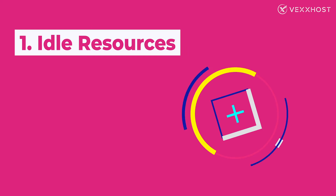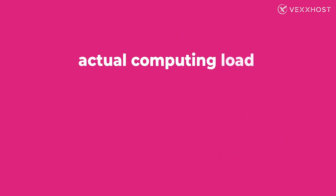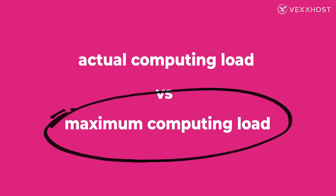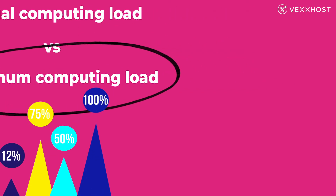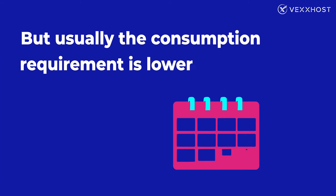Idle resources. Idle resources are those that are paid for but that aren't used. Therefore, when it comes to actual computing load versus maximum computing load, companies typically opt for the latter, as that's how you can make sure that everything runs smoothly whenever you need to use resources at peak capacity. However, on most days, the consumption requirement is much lower.